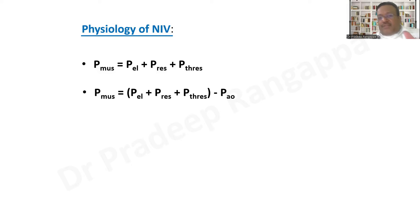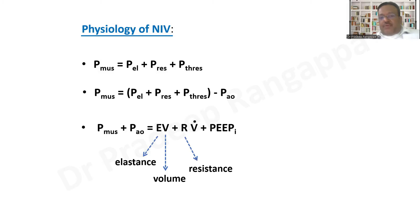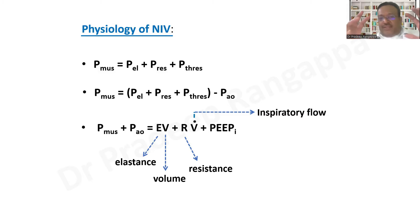In essence, Pmus plus alveolar opening pressure determines whole ventilatory function, where E stands for elastance, V for volume, R for resistance, and V-dot for inspiratory flow. The effort must overcome elastance, volume-related pressures, resistance, and maintain optimal inspiratory flow, with your own intrinsic PEEP keeping alveoli open. The concept of NIV is centered on how it bears on overcoming these pressures — something HFNO has nothing to do with.